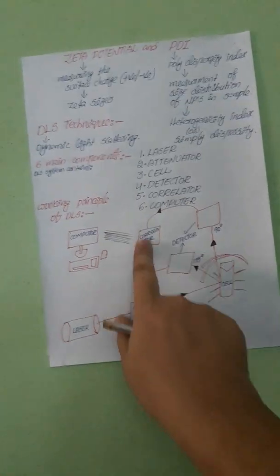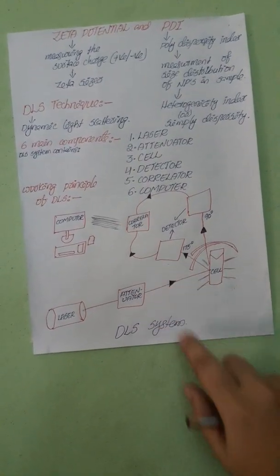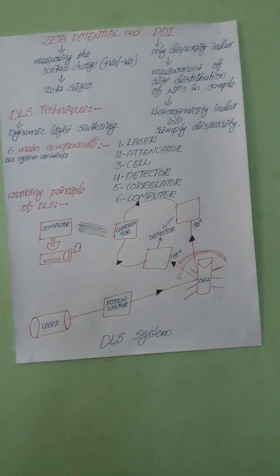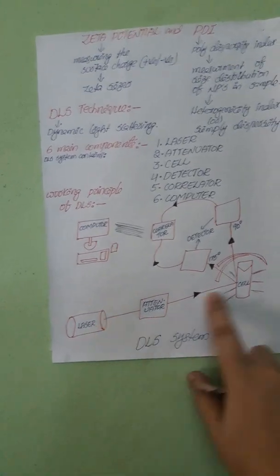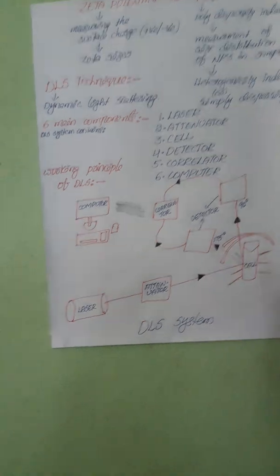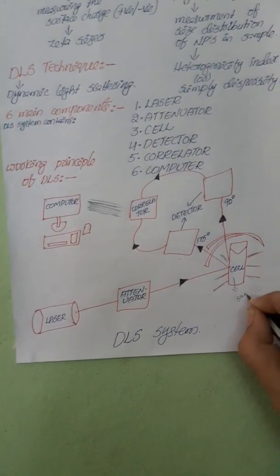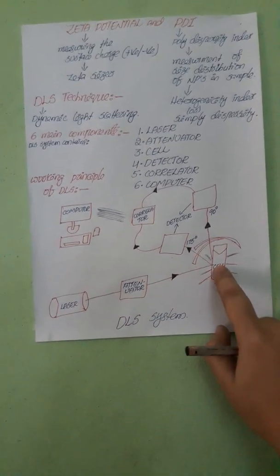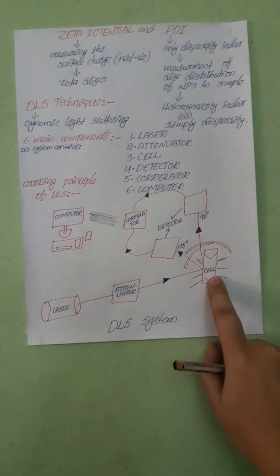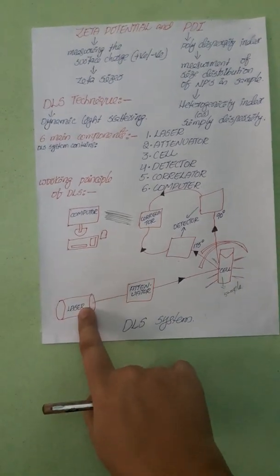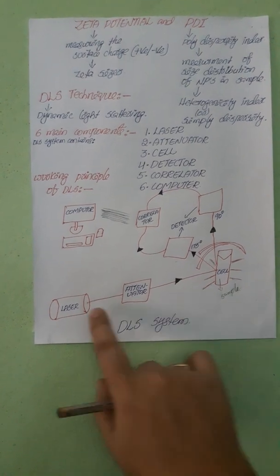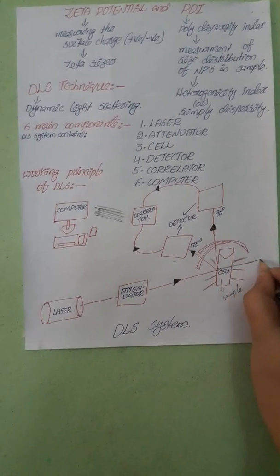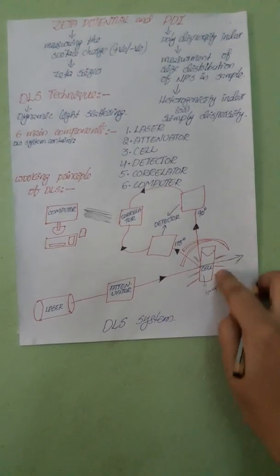Now we will move on to the working principle of the DLS system. In the DLS system, we are using light to determine the sample within the cell. This cell contains the sample. For the light source, we are using a laser. This laser provides the light. Normally when we focus the light onto a sample, it will pass in a straight pathway.